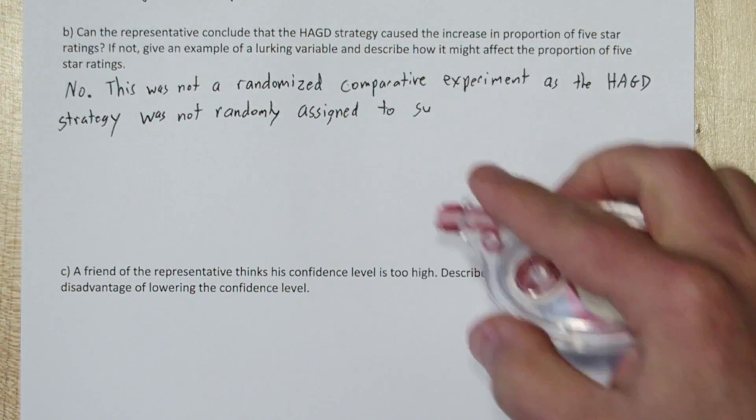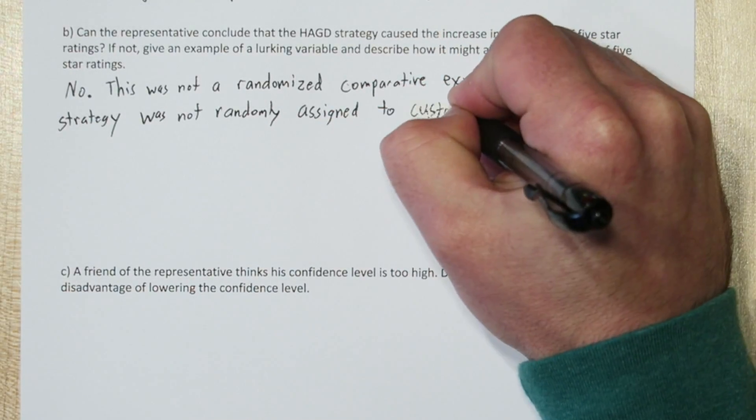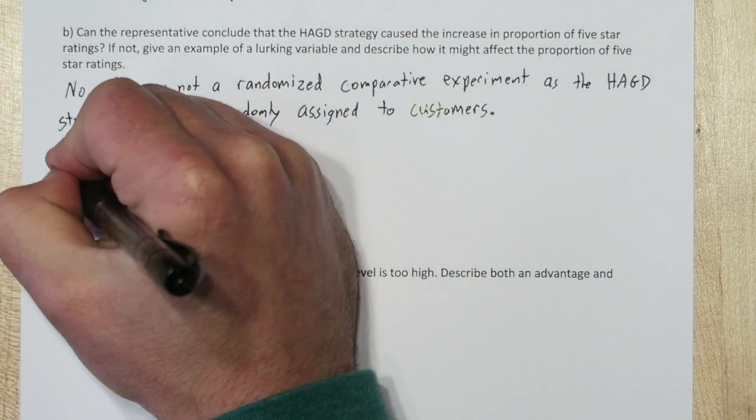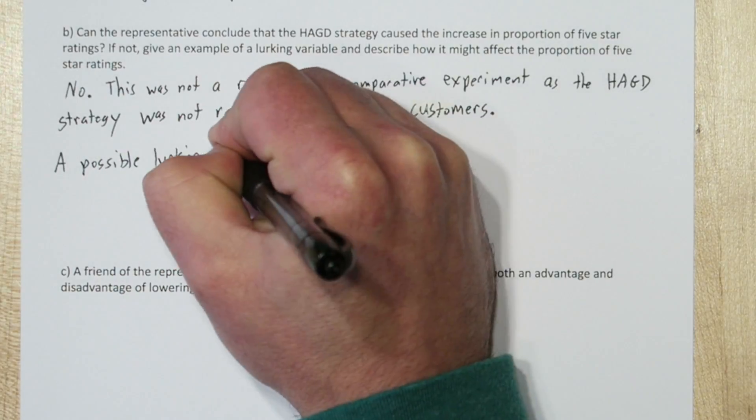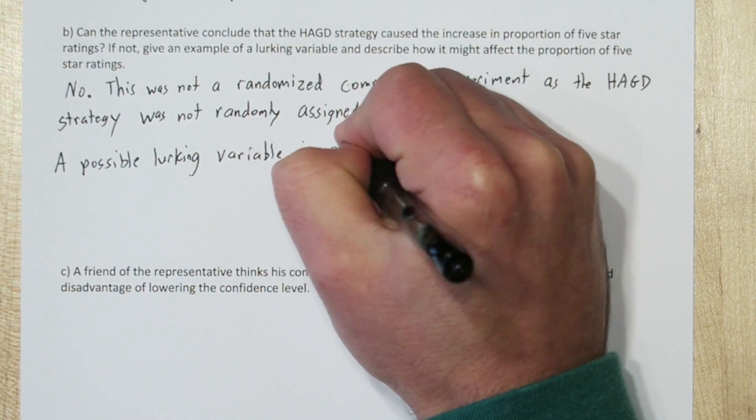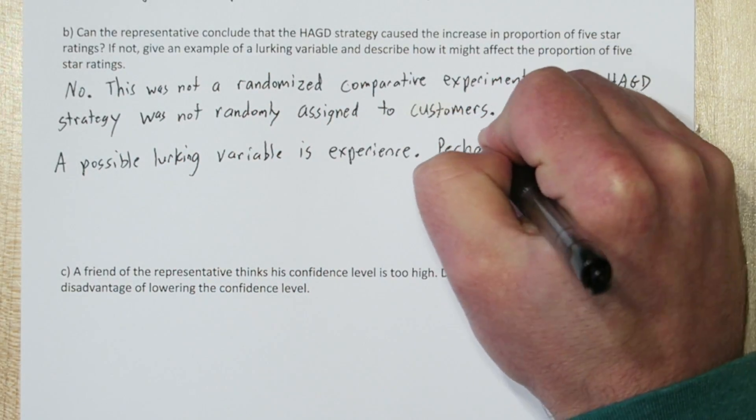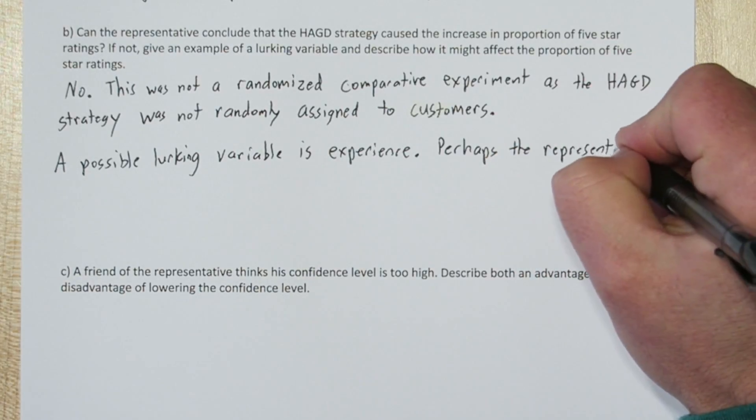A better way to do this would have been to flip a coin before talking to each customer and sometimes implement the have a great day strategy and sometimes not. Then you could compare those two proportions and perhaps conclude about causation.